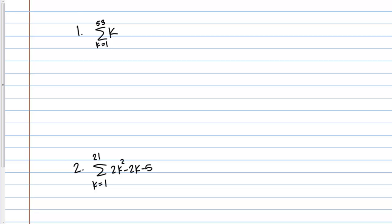Let's work through a few examples of sigma notation and sum formulas. The first example, number 1 here, is the sum from K equals 1 to 53 of K. As I read that, I've kind of said what this notation means, but this symbol that sort of looks like an E is called a sigma.